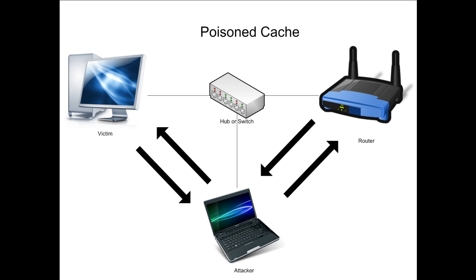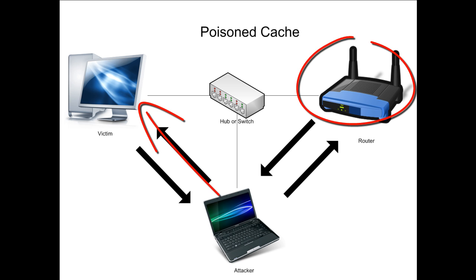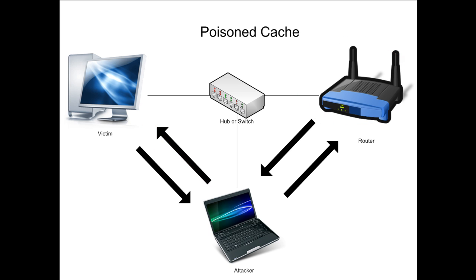Here is a scenario where an attacker poisons the ARP Cache. He sends a reply to the victim's computer with no request, stating that he is the router by associating his computer's MAC address with the router's IP address. The victim's computer willingly accepts it and updates the cache. Now all traffic to the router from the victim will be flowing through the attacker.